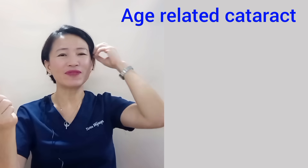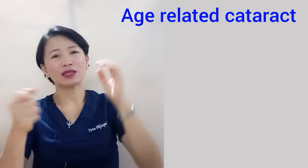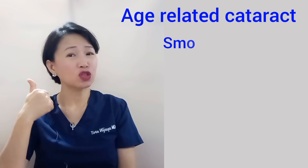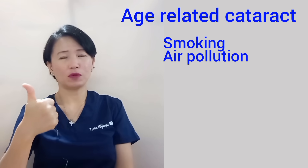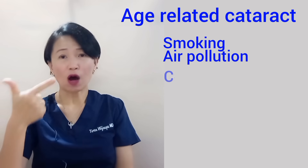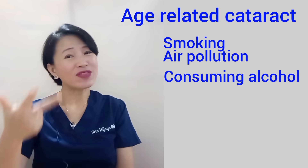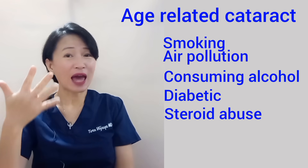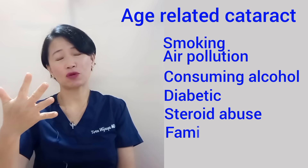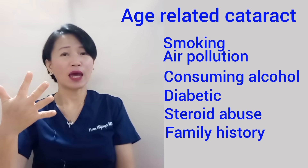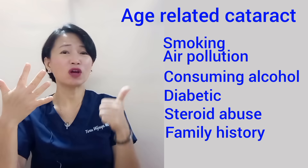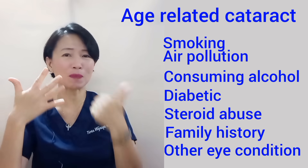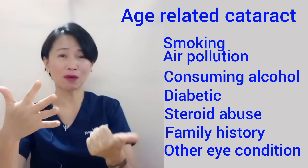Our risk of developing age-related cataract is higher if you smoke or are exposed to air pollution, drink alcohol, have diabetes, use corticosteroids, have a family history of cataract, or have a history of certain eye diseases like uveitis, retinitis pigmentosa, or glaucoma.